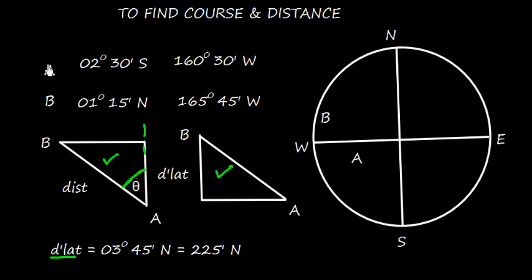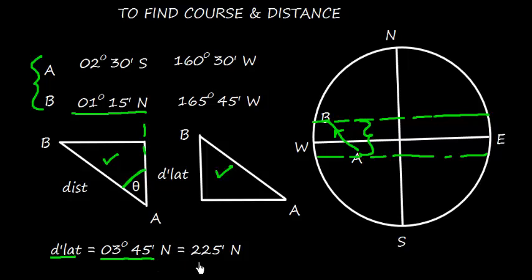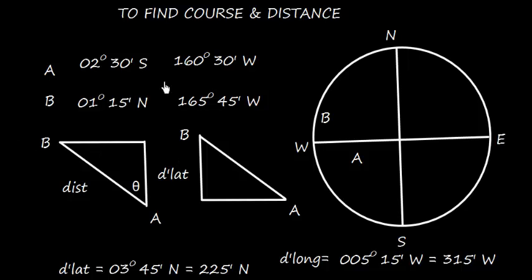Now we need to find D-lat, the difference in latitude between A and B. Since we are moving from A to B, this one is one parallel of latitude and this one is another. The difference in latitude will be the sum of the two, named in the direction of travel — we are traveling towards north, so D-lat is 3 degrees 45 minutes north, which converts to 225 minutes north.